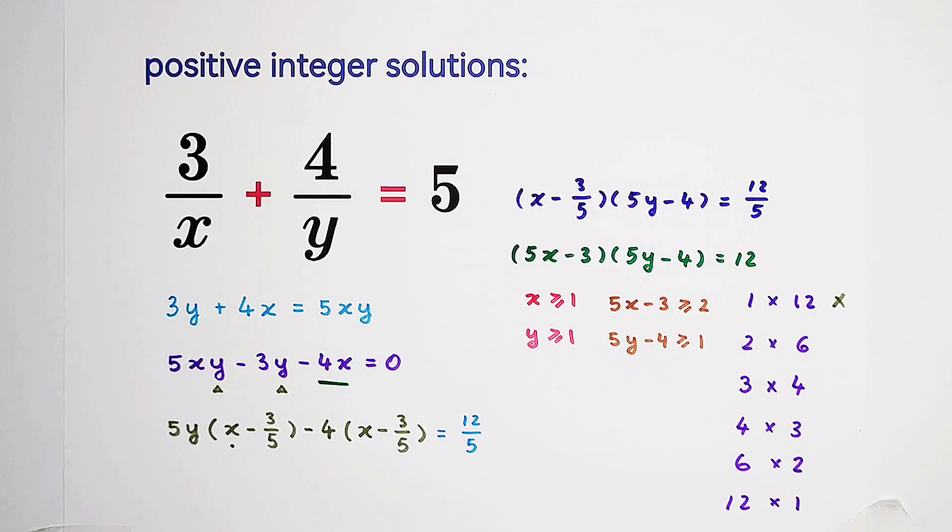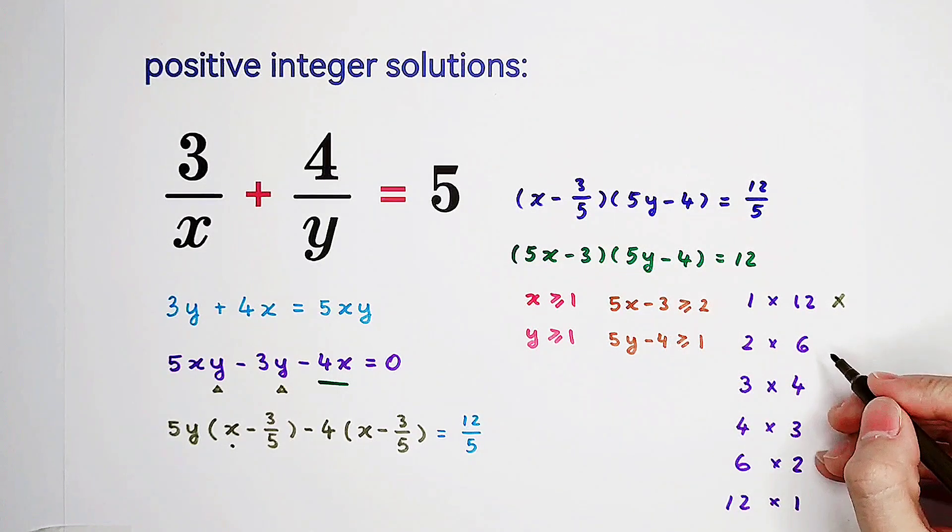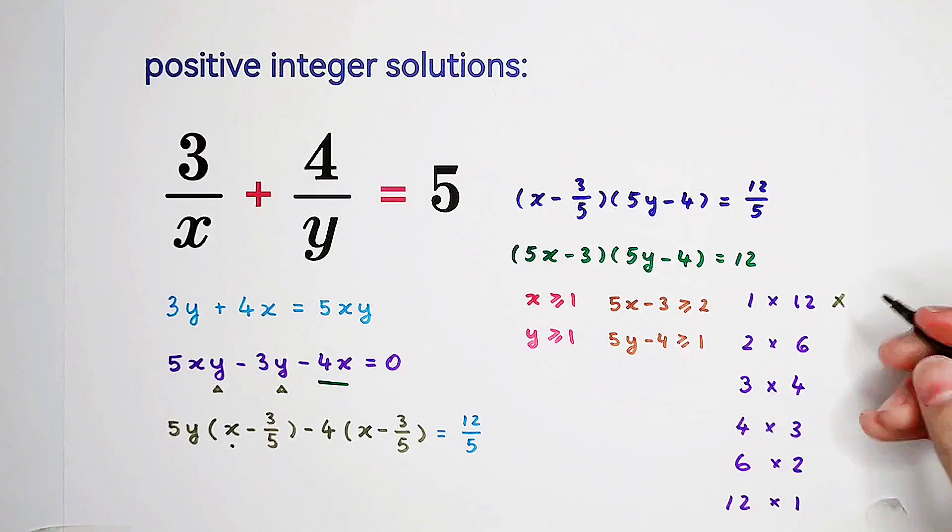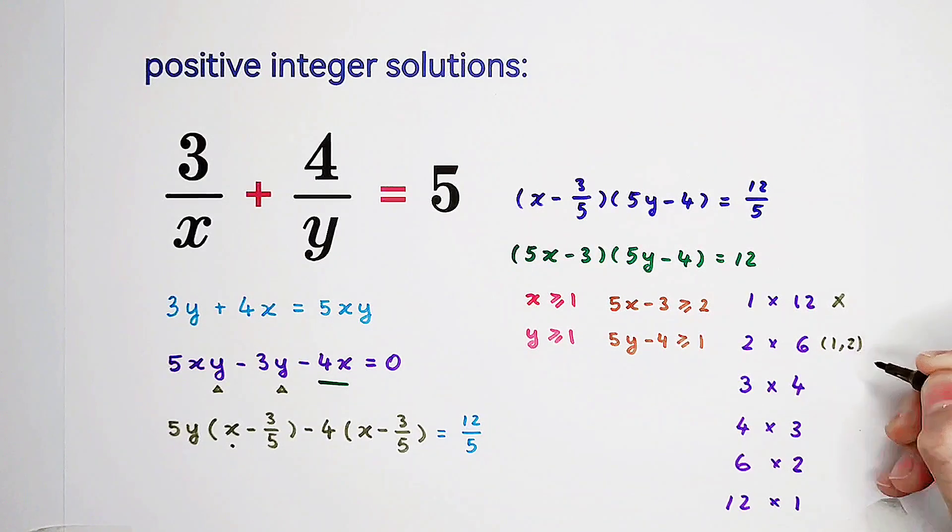There is no solution to the first case because 1 is less than 2. To the second case, x is 1, y is 2. To the third case, no solutions. To the fourth case, no solutions. To the fifth case, no solutions. And, to the last case, x is 3, y is 1.